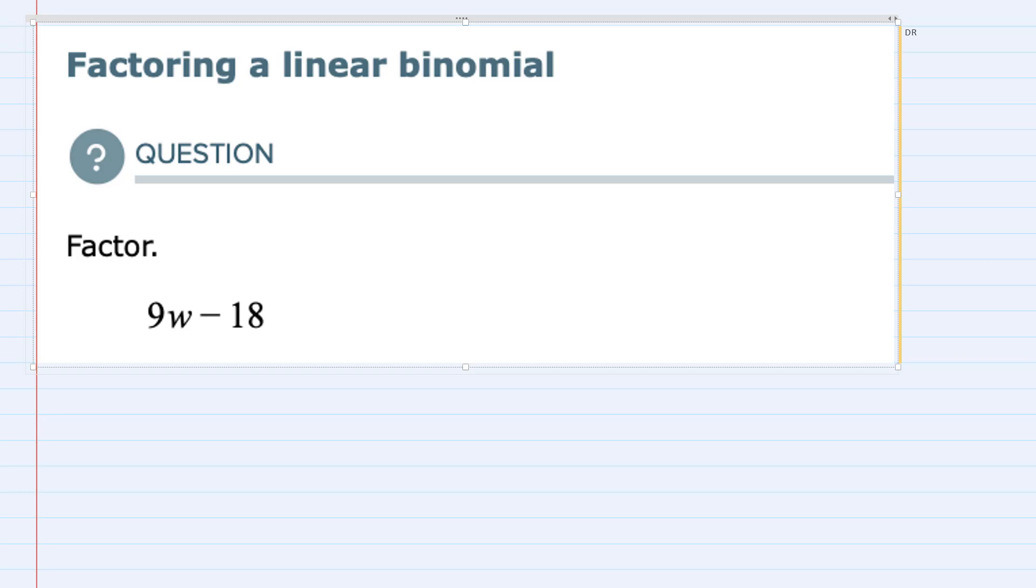In order to factor this, we have two terms separated by subtraction. We have 9w and we have 18. The question becomes, is there a common factor that we can take out of both of those two terms, the 9w and the 18?